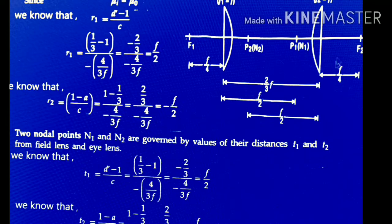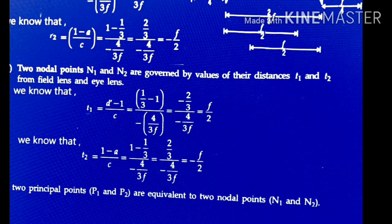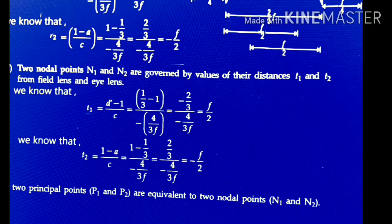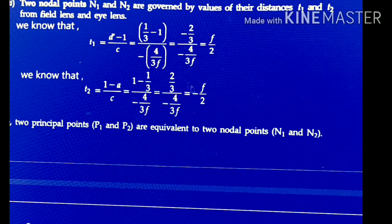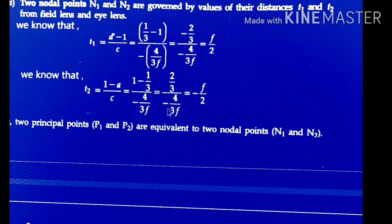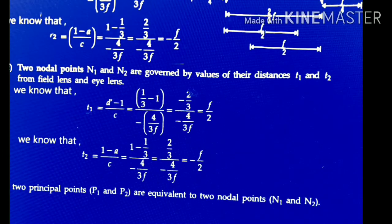The last two cardinal points are the nodal points N1 and N2 in the field lens and eye lens. We derive distances T1 and T2. T1 = (D' − 1)/C = (1/3 − 1)/(−4/3F) = (−2/3)/(−4/3F) = F/2. In similar case T2 = (1 − A)/C = (2/3)/(−4/3F) = −F/2. Looking at T1 = R1 = F/2 and T2 = R2 = −F/2: both values are the same, so the two principal points are equivalent to the two nodal points.